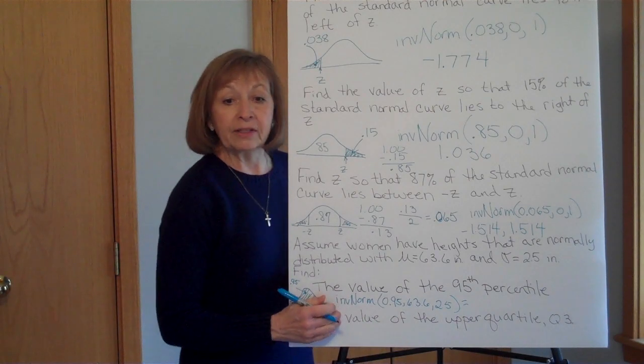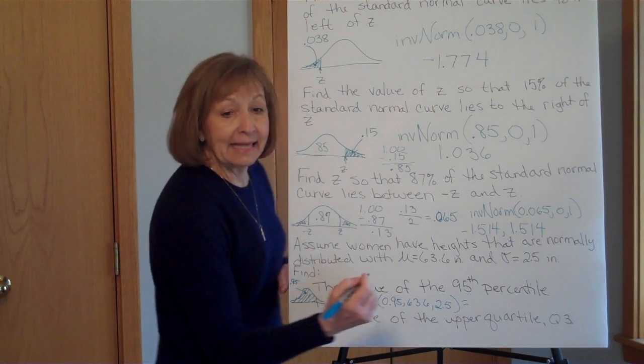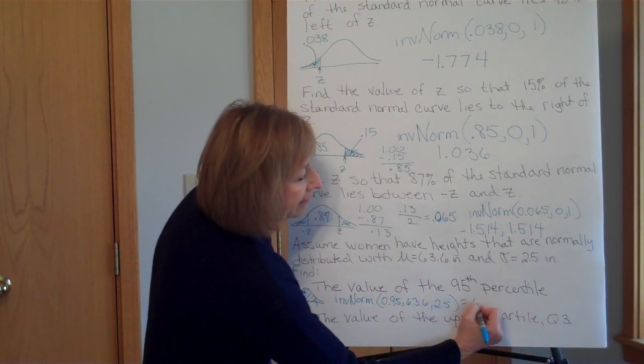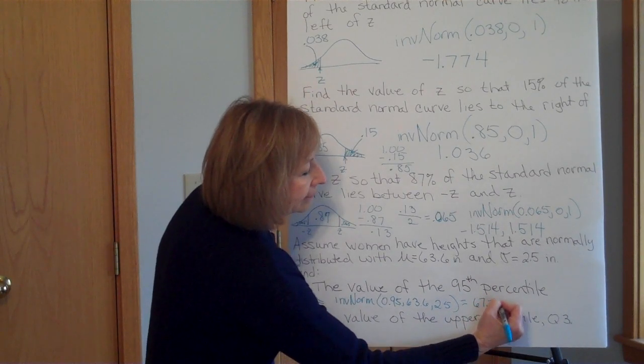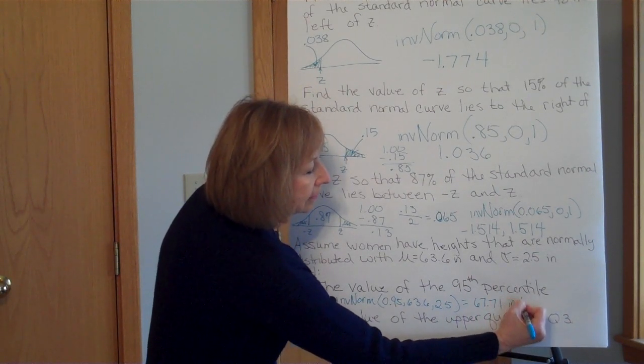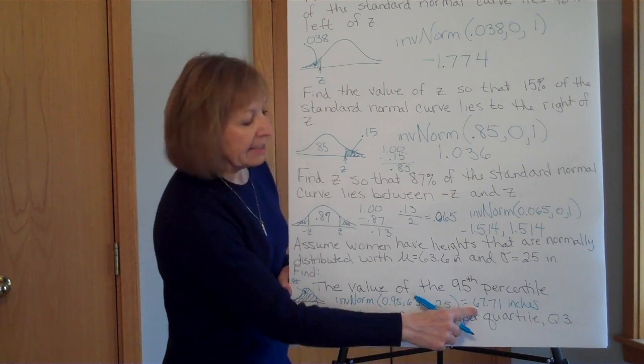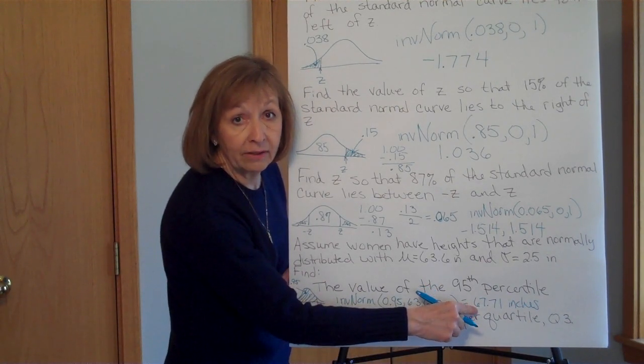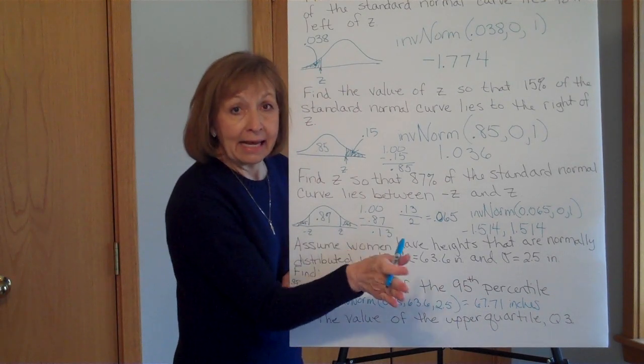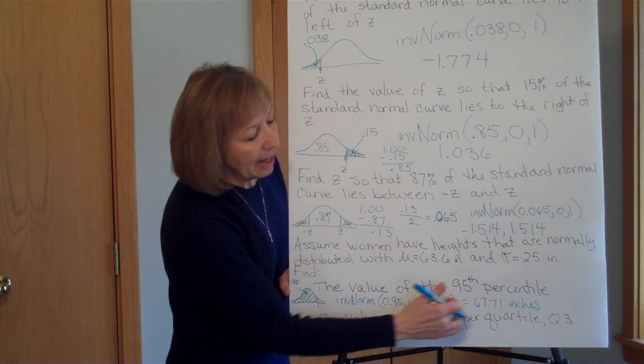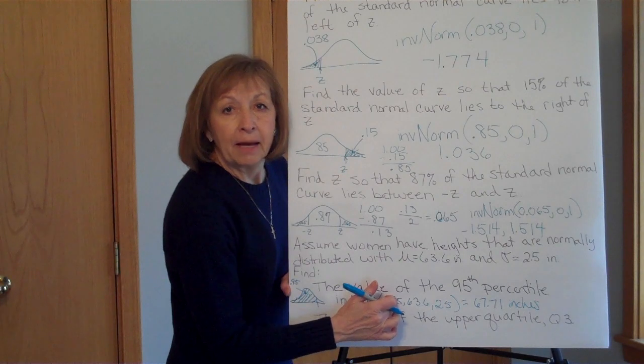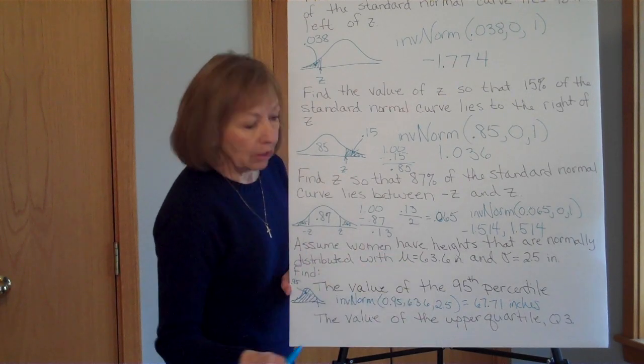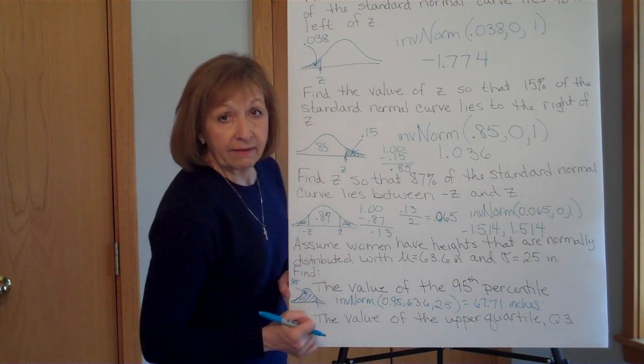The mean though is 63.6 and the standard deviation is 2.5. And when you go through and calculate that, you will get 67.71 inches. So a woman that is 67.71 inches tall is at the 95th percentile. Her height is at,